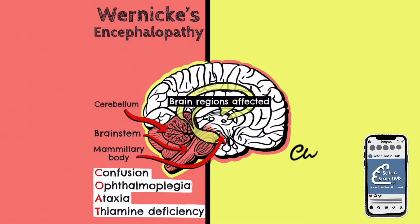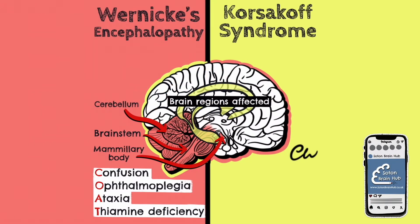And now onto Korsakoff syndrome. This is a disorder characterised by disproportionate memory loss in relation to other mental aspects. The same regions of the brain are affected in Korsakoff syndrome as in Wernicke's encephalopathy, with the addition of the limbic system.